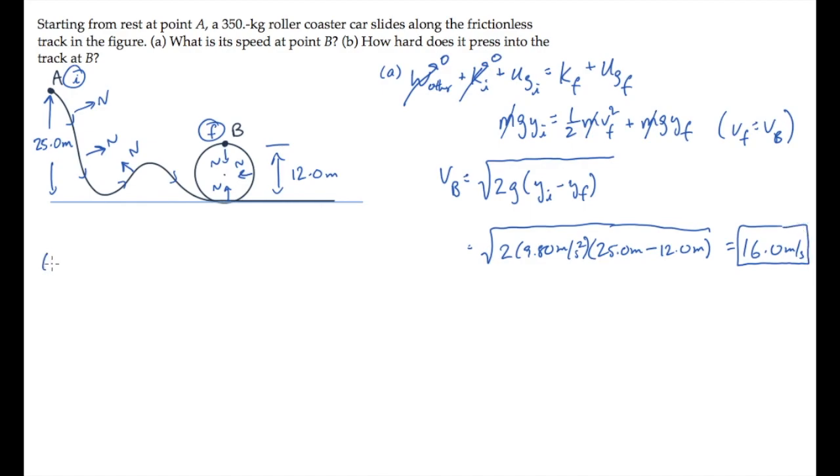Part B asks us how hard the car is pressing into the track at that point. That is equal to the normal force exerted by the track on the car, by Newton's third law. We'll find this by drawing a free body diagram and applying Newton's second law.